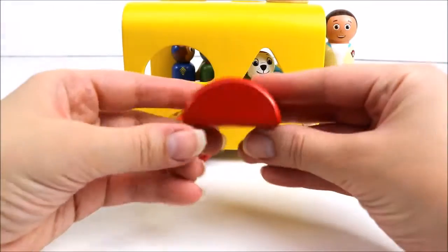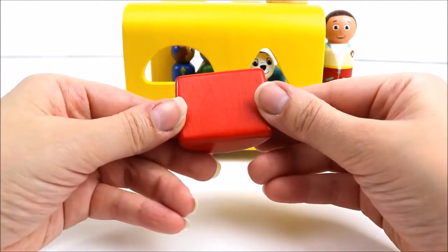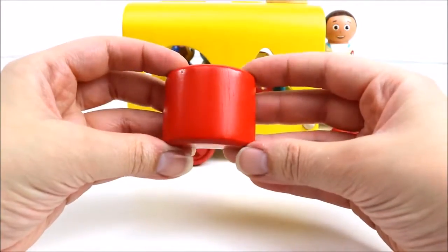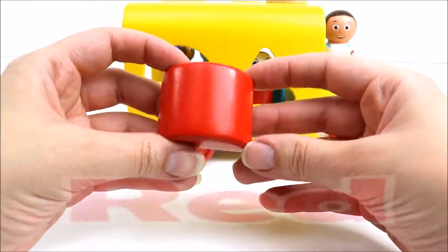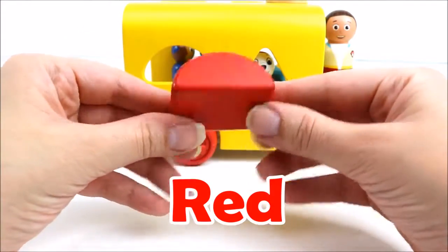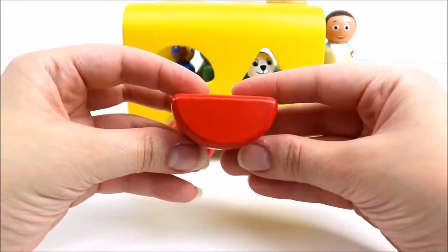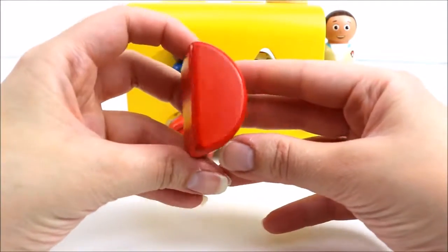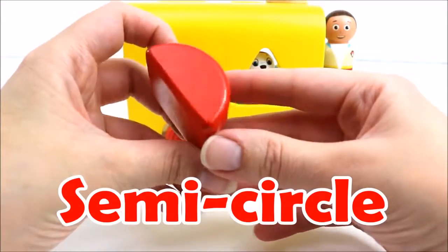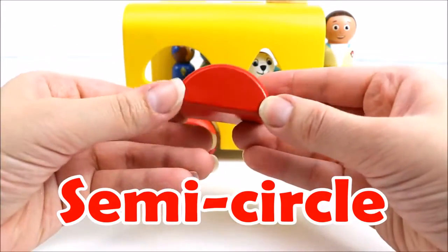And Marshall has a block with him. What color is this block? That's right, it's red. And what kind of shape is it? Can you guess? It's a semi-circle. Let's put it in the school bus.